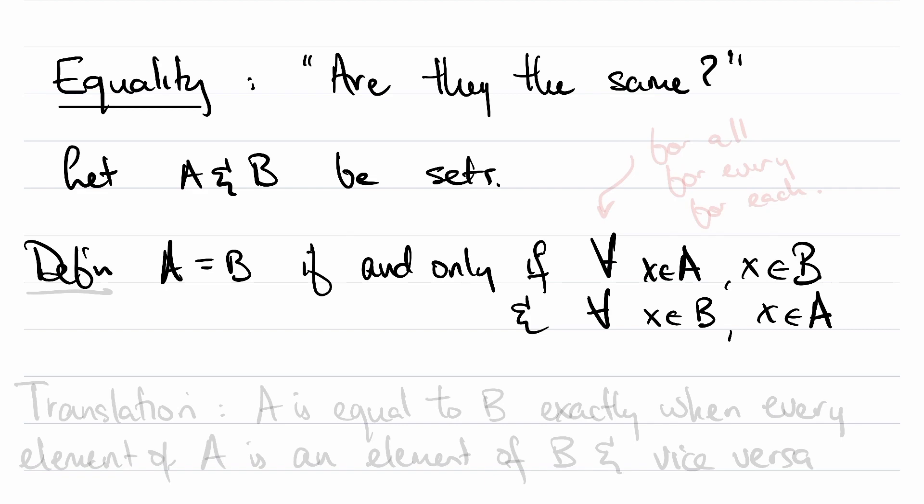Here I've introduced a quantifier that you may not have seen before. This upside down A symbol means for all, or for every, or for each, depending on the context.